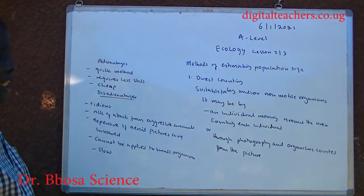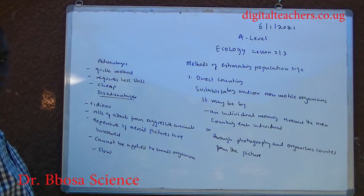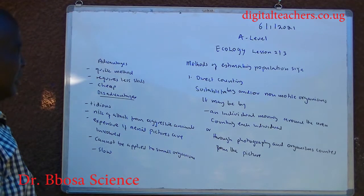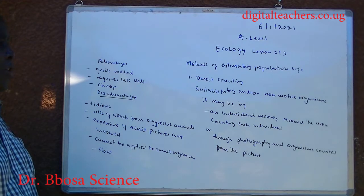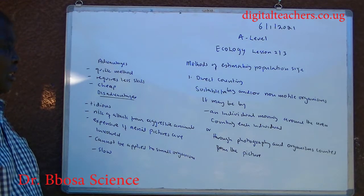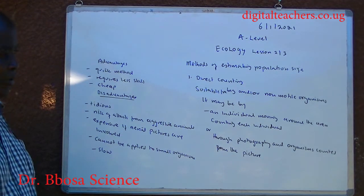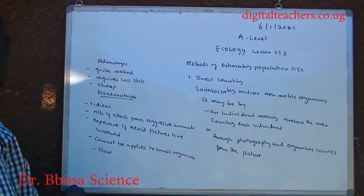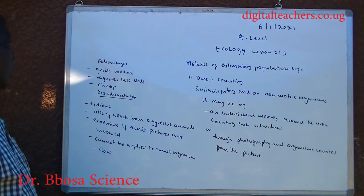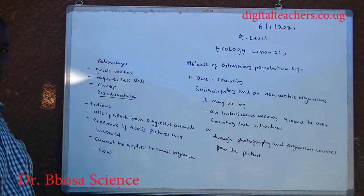Methods of estimating population size. One: direct counting, suitable for big and slow-moving organisms. It may be by an individual moving around the area, counting each individual, or through aerial photography and counting organisms in the photographs. Advantages: it is a quick method, requires less skill, and is cheap — you may just need your book and a pen.